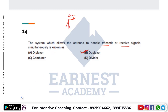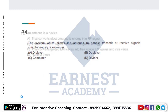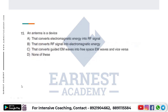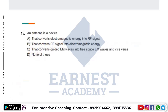The antenna is a device that converts electromagnetic energy into an RF signal, and also converts RF signal into electromagnetic energy. It works in both directions — transmitting and receiving.